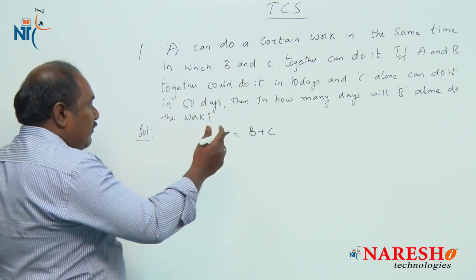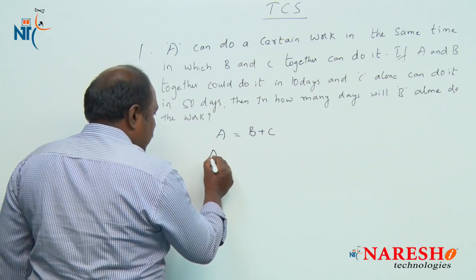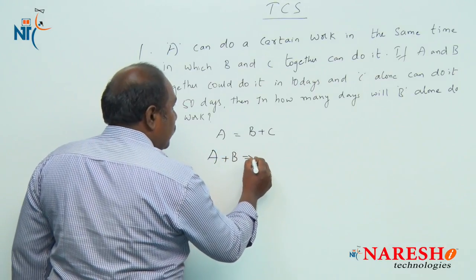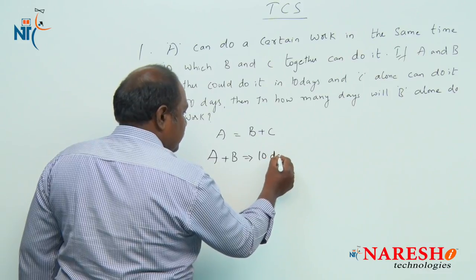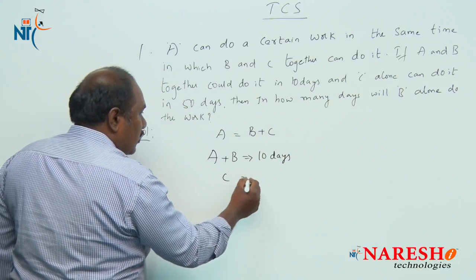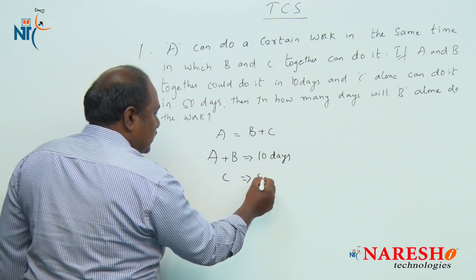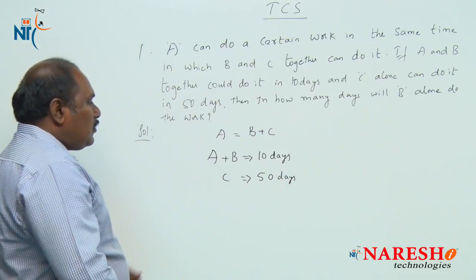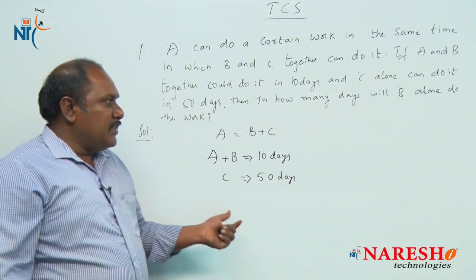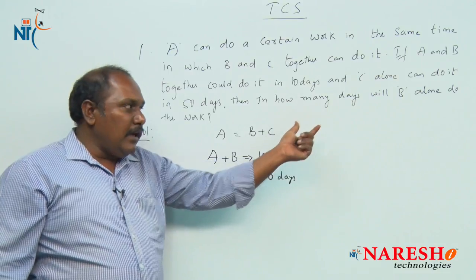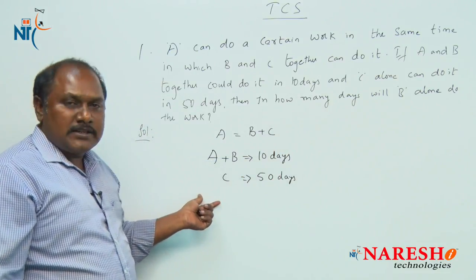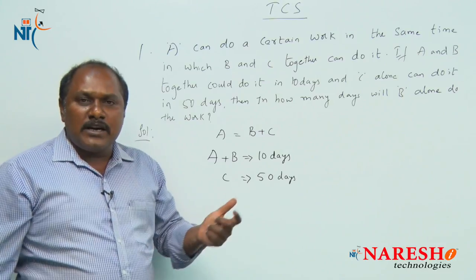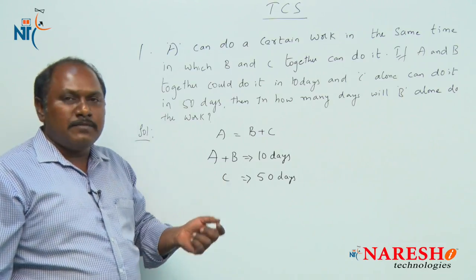From the given information, A and B together can complete the work in 10 days, and C alone can complete the same work in 50 days. We need to find in how many days B alone can do it. There are different ways to answer this, but let us try to do it in a simple way.